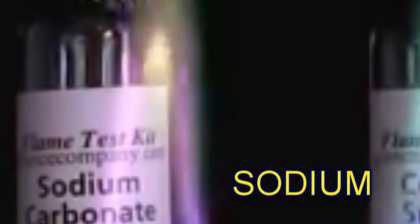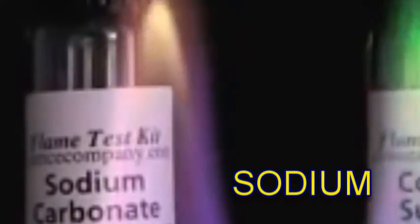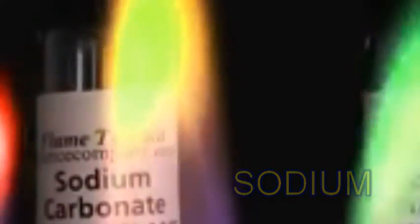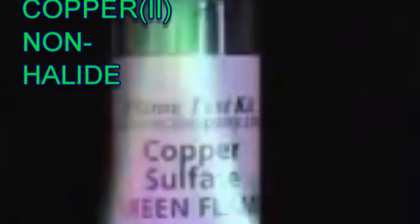Typically a sample of a compound containing the element is placed on a platinum or nichrome wire and put into a Bunsen flame. The resulting color change is observed.